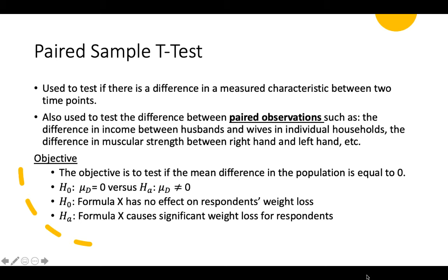It is also used to test the differences between paired observations, like husband and wife in a single household, your right hand and left hand, or a student and their mentor — anything that can be paired together. That's when we use the paired sample T.